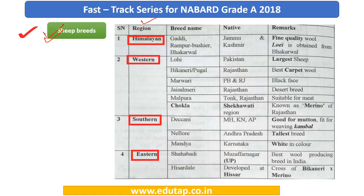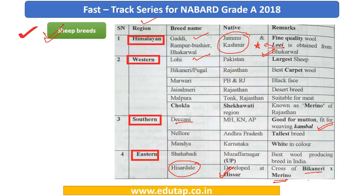For the Himalayan region, the breed names are Gatti, Rampur, Bushir and Bhakarwal, native to Jammu and Kashmir. One important point: Loi is obtained from Bhakarwal. For the Southern region, breeds include Dekani, Nellor and Mandia. Dekani is good for mutton and can also be suited for Cumble. For the Eastern region, there is the Hisardail breed, developed at Hisar — it is a cross of Bicanary and Merino. This is an important fact to retain.